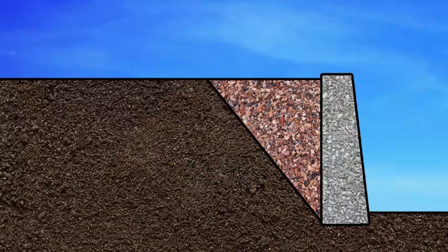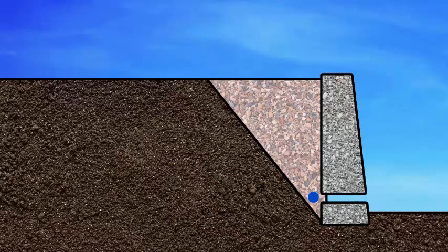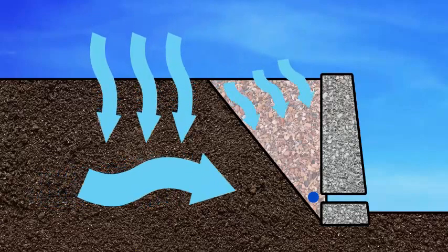An agricultural drain placed behind the wall within the free-draining backfill will help drain the water away to the stormwater drainage system.